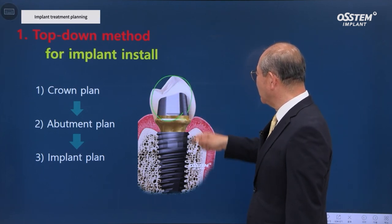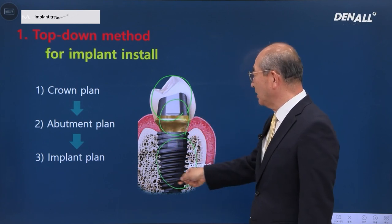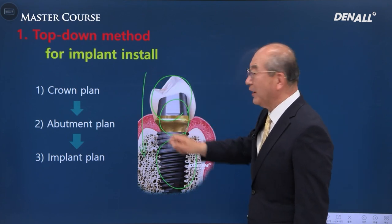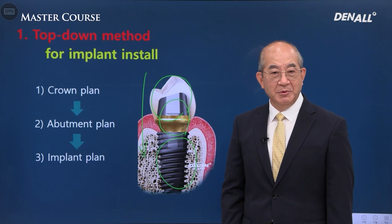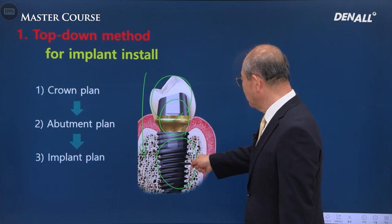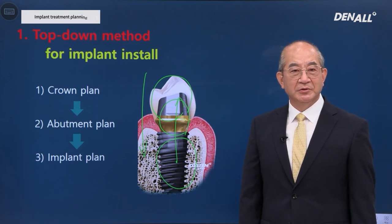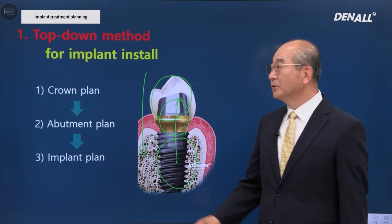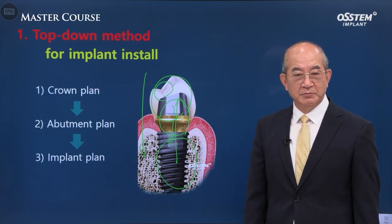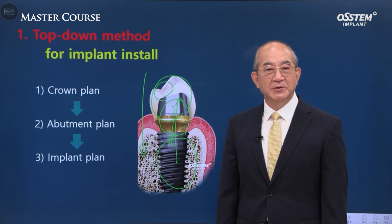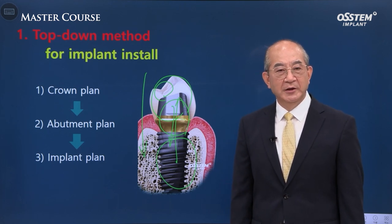This is referred to as the top-down method. First, you determine the crown; second, the abutment is selected; and third, the implant is chosen. This is literally the top-down method. There's also the opposite concept — the bottom-up concept — where the implant is placed first and then the prosthesis is determined. The master course treatment planning process centers around the top-down method, in which the crown is selected first. Please remember this.